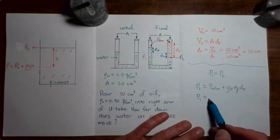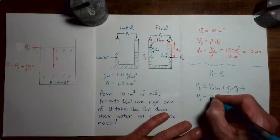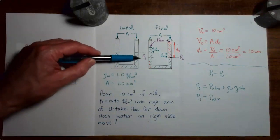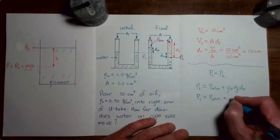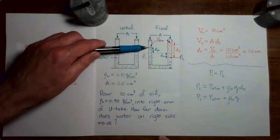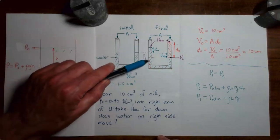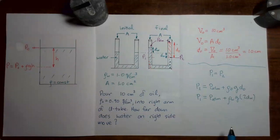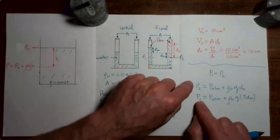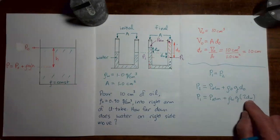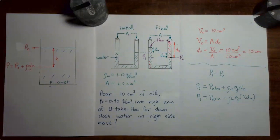For P1, we start with atmospheric pressure at the top of the left column. Going from the top of the left column down to the level of P1, we travel through water. The distance traveled is 2 times D_W, because the water on the left rose by D_W above the original level. So P1 equals atmospheric pressure plus the density of water times g times 2D_W. Now set P1 equal to P2 and try to solve for D sub W before rejoining the video.